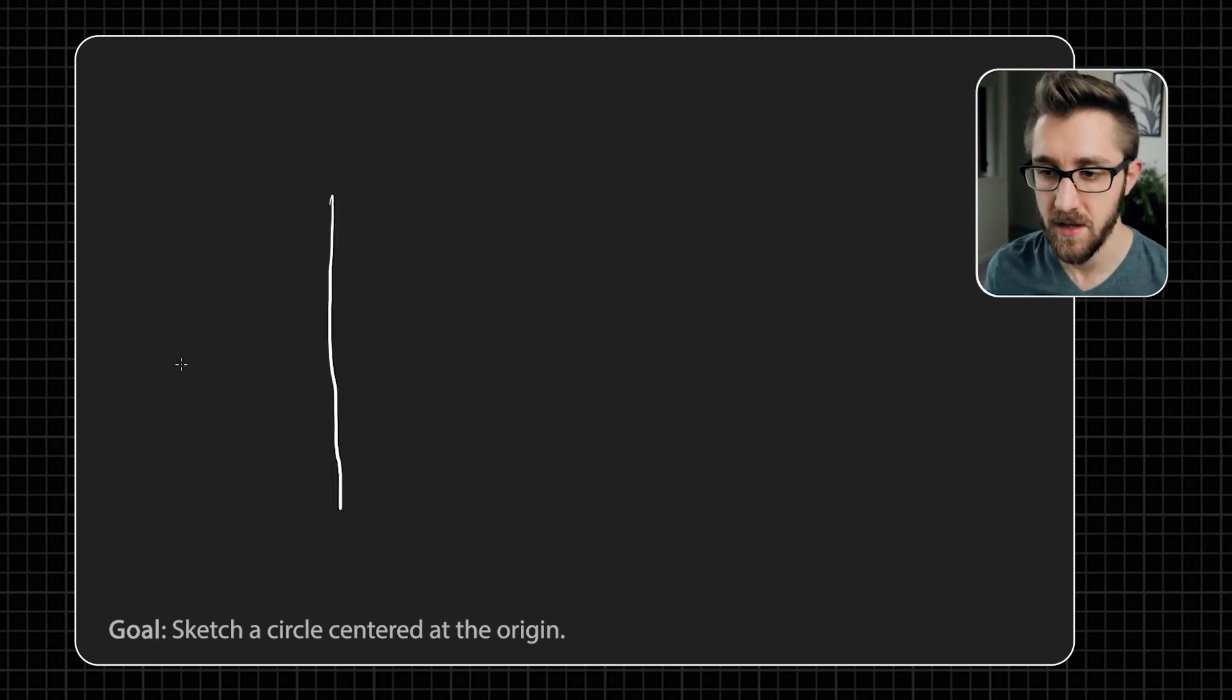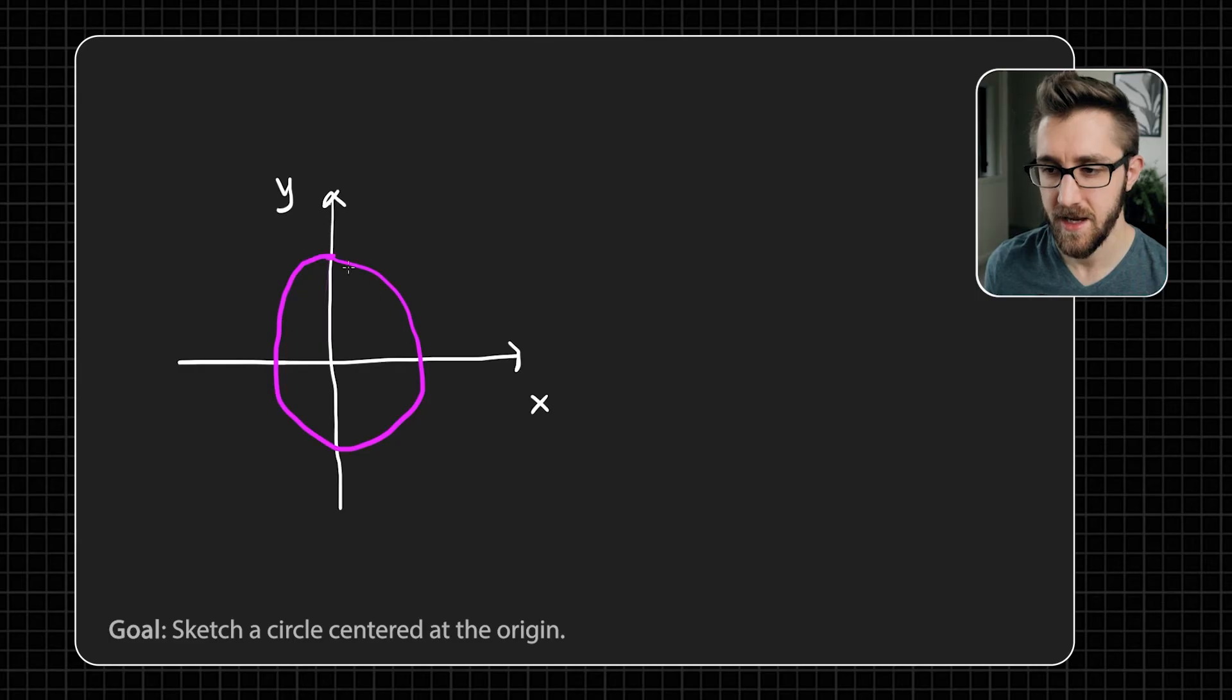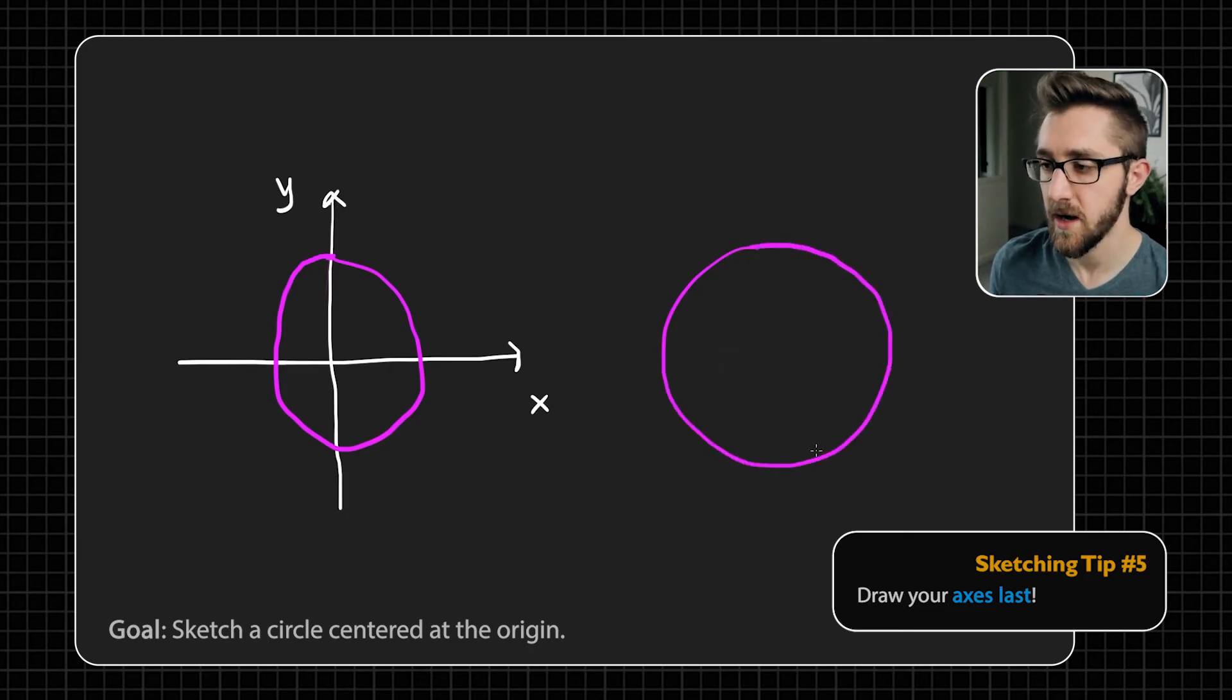This is how I used to do it. I draw these axes first and then I would try to draw a circle whose radius is like here from the origin to here. I want it to be centered at the origin, so maybe I would try to do something like this. And yeah, it comes out kind of weird and oblong, it's kind of squished on the left hand side. Here it's a little bit boxy.